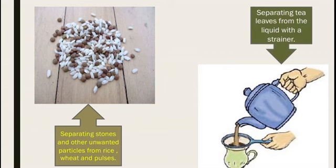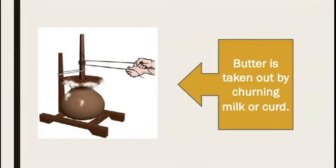When we churn the milk curd, we get two different useful products. That is the third reason for separating the components of a mixture: to obtain pure and useful components.